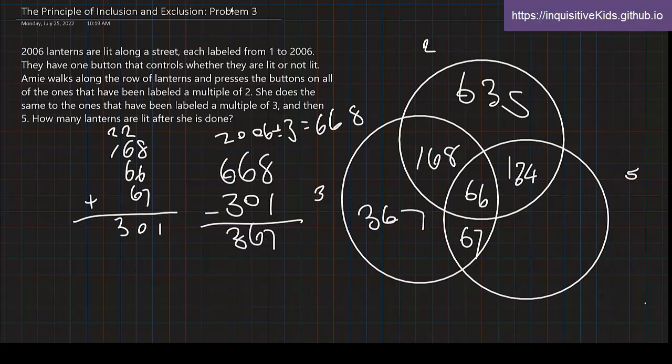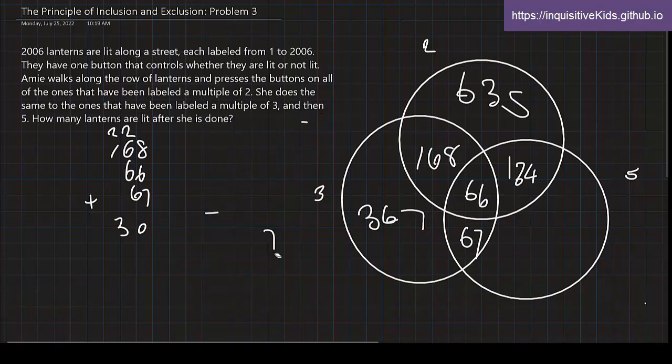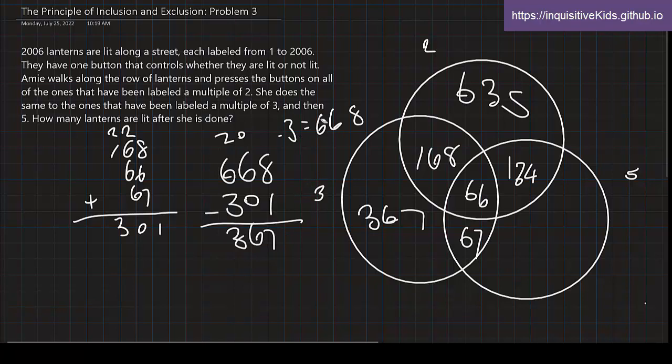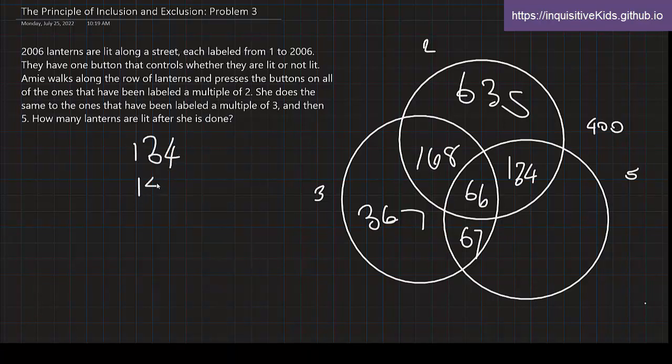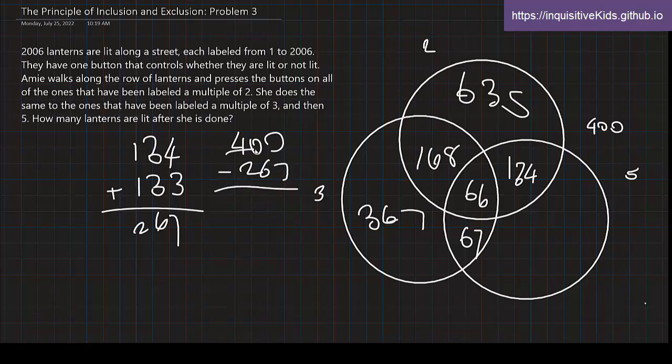And now we're at our last area, which is the multiple of 5. What is 2006 divided by 5? The closest multiple of 2000, which is a multiple of 5, is 400. So over here, this is 400. And 134 plus 66 plus 67, which is 267. Now subtract 267 from 400, and we get 133. So over here, this is 133.